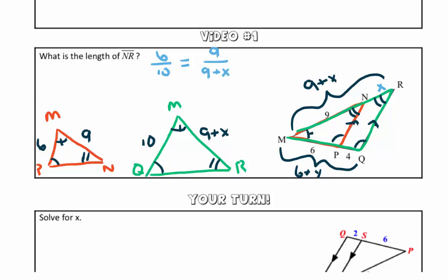To solve our proportion, we will cross multiply. So we will have 90 is equal to 6 times the quantity 9 plus X.